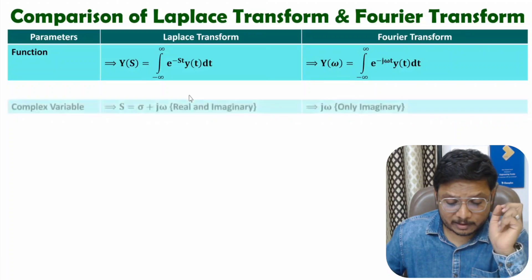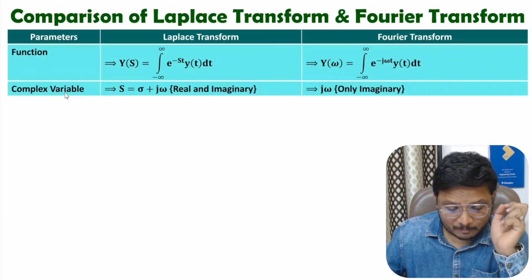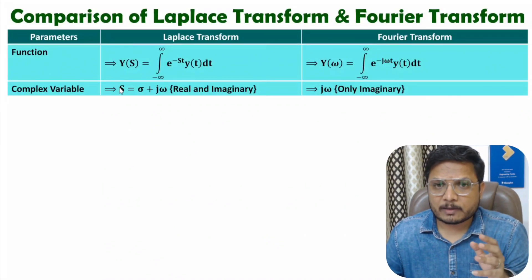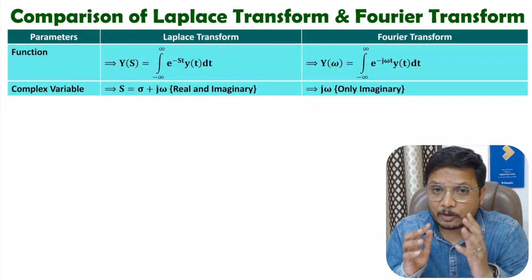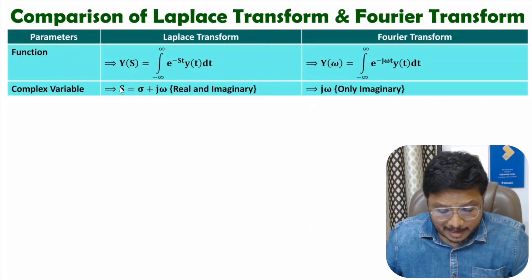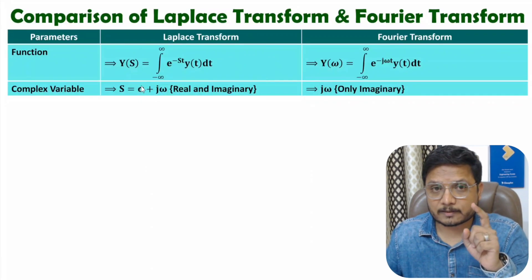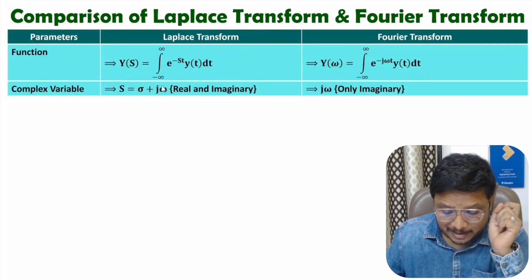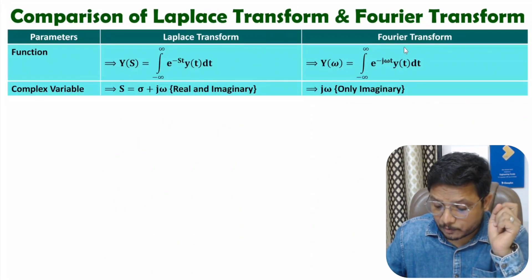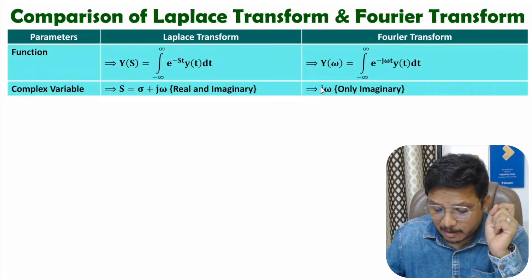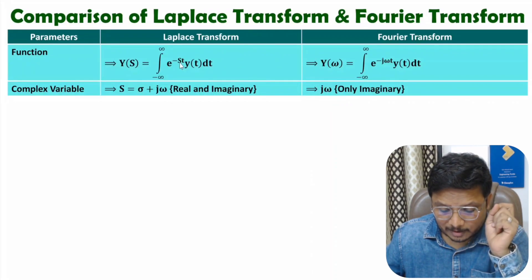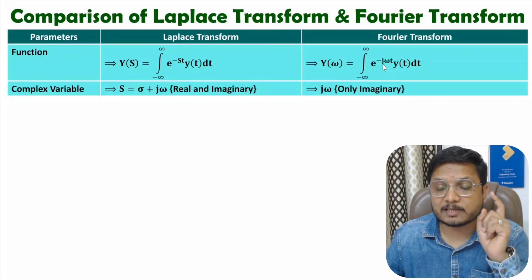Now let us compare based on the complex variable. In Laplace transform, we have the complex variable s, where s equals sigma plus jω. Here sigma is the real component and omega is the imaginary component. While in Fourier transform, we only have the imaginary component, meaning we only have jω. So Laplace transform uses s, which is sigma plus jω, while Fourier transform only has the imaginary component.